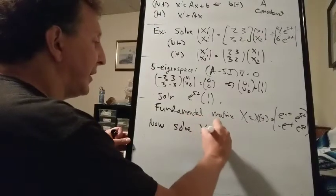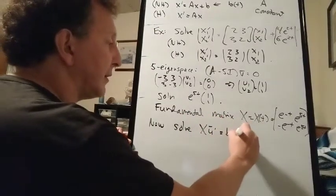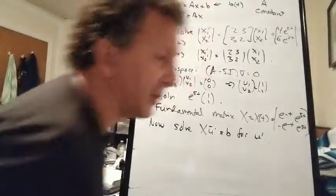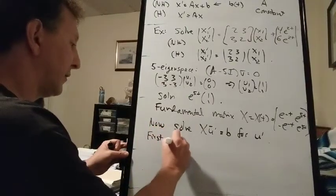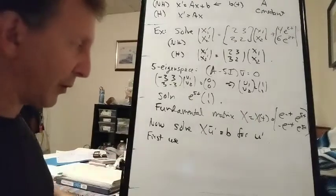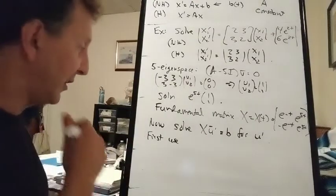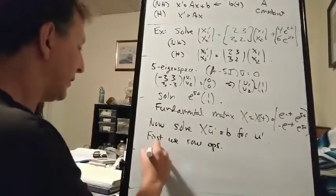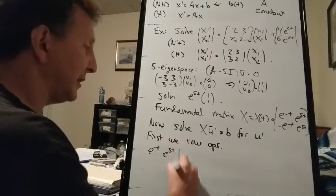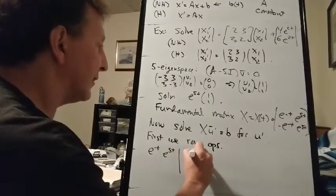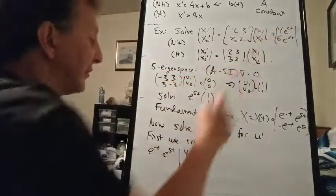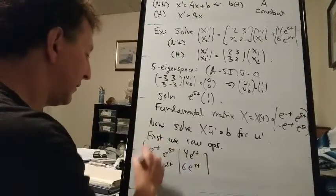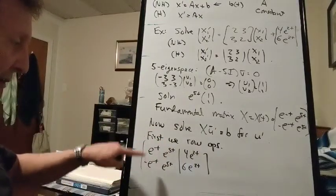Now we have to solve X u prime equals b for u prime, and later integrate. Let's do it by row operations first. The augmented matrix is [e^{−t}, e^{5t} | 4e^{2t}; −e^{−t}, e^{5t} | 6e^{2t}]. We add row 1 to row 2 to get a zero: [e^{−t}, e^{5t} | 4e^{2t}; 0, 2e^{5t} | 10e^{2t}].